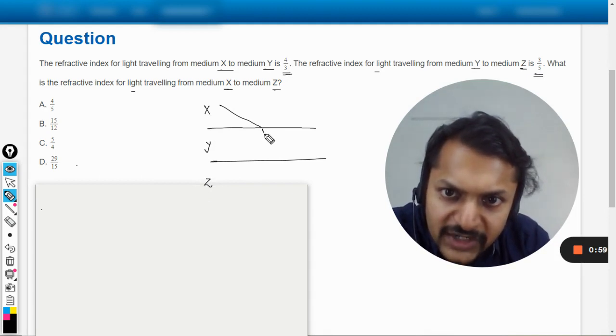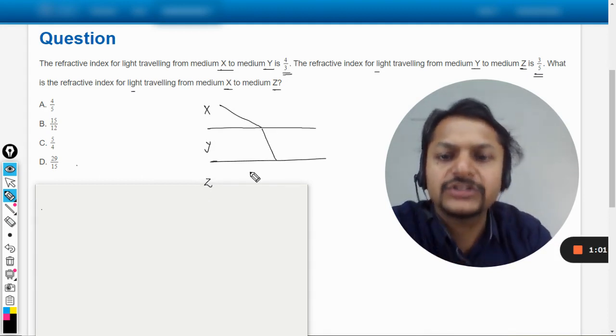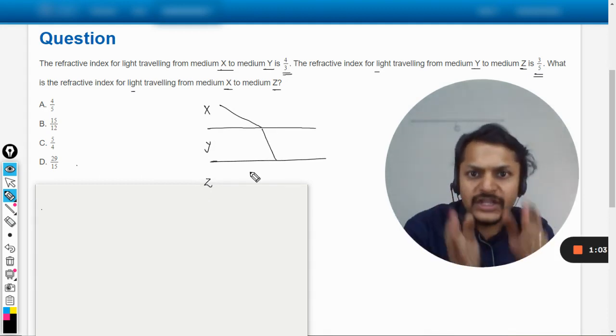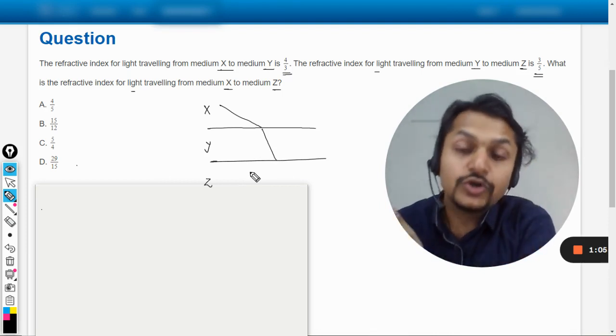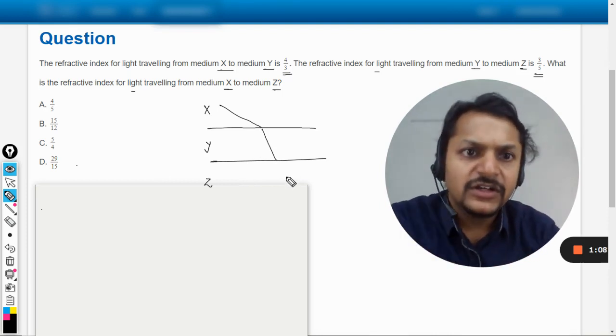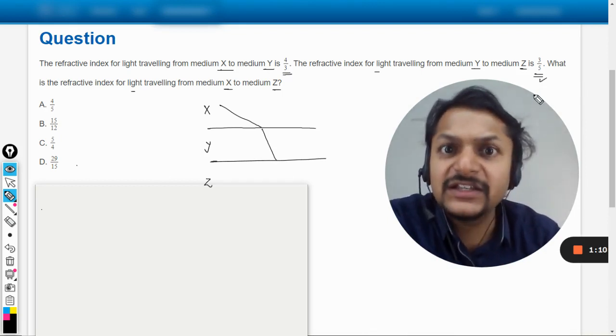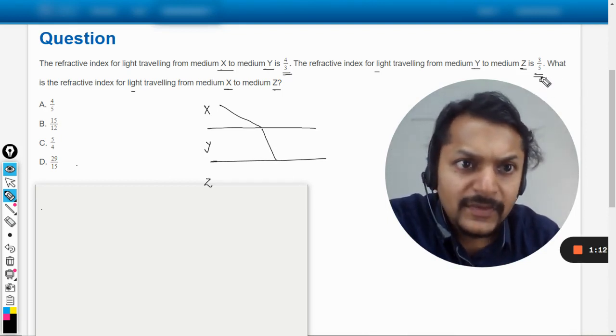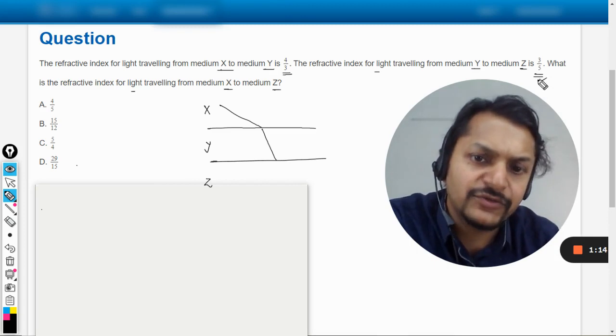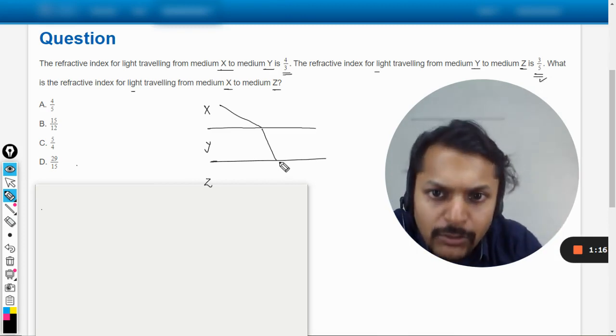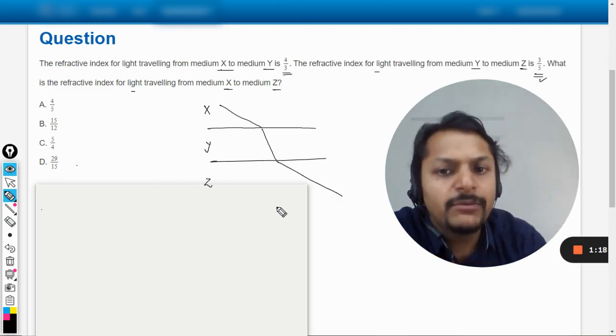So first of all it will bend like this because the light is moving from rarer to denser, so it is going to bend towards the normal. Now further, the net refractive index is less than 1, it becomes 3 by 5, so it will be moving away from the normal. Now it would be going like this.